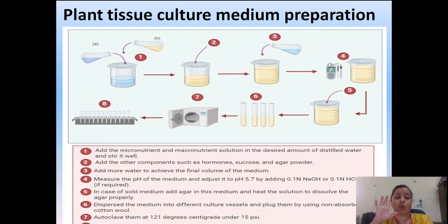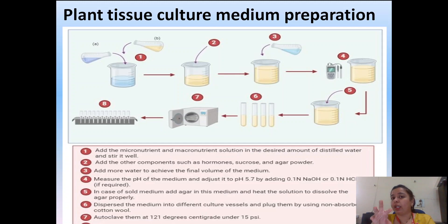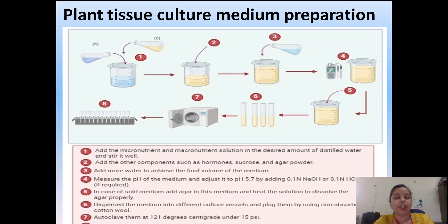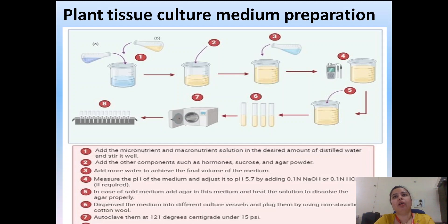In the seventh step we are autoclaving. Autoclaving is done for sterilization of the plant tissue culture medium. If the growth hormones used are heat-labile — meaning they get destroyed or degraded by heat — we use filter sterilization instead. In autoclaving, we heat the plant tissue culture medium at 121°C under 15 psi pressure for 30 to 40 minutes.